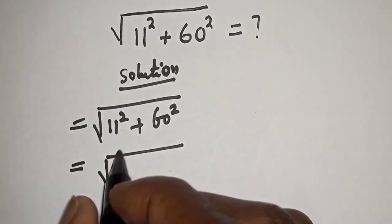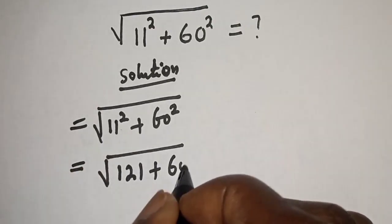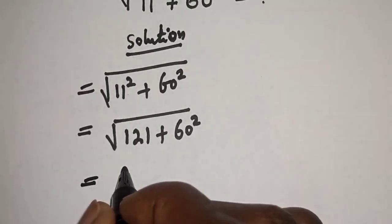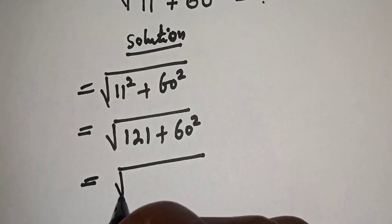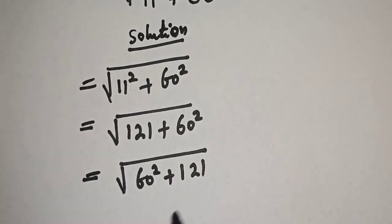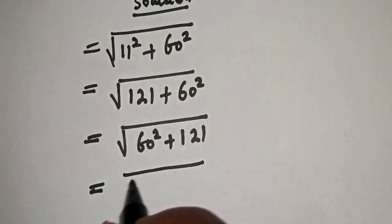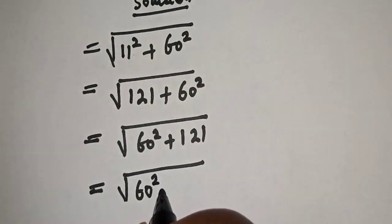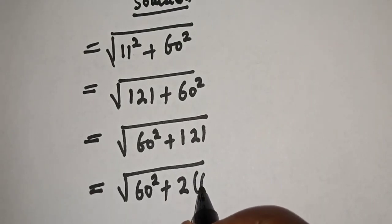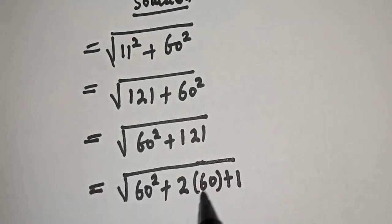The square root of 11 squared plus 60 squared equals the square root of 121 plus 60 squared. We can rearrange this as the square root of 60 squared plus 121. Notice that 121 can be written as 2 multiplied by 60 plus 1, because 2 multiplied by 60 is 120, and 120 plus 1 is 121.